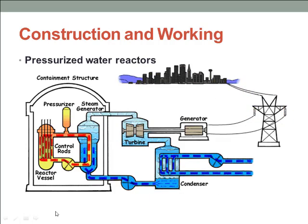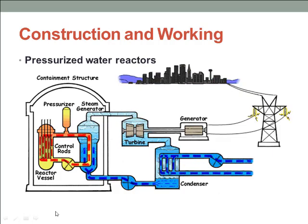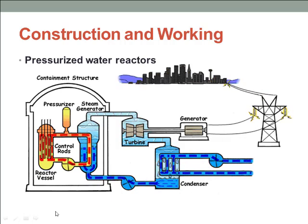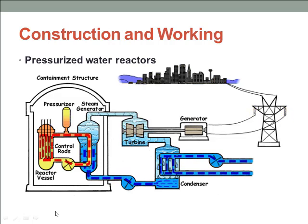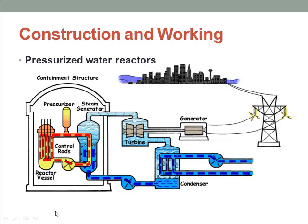Water in the reactor core reaches about 325 degrees Celsius, hence it must be kept under about 150 times atmospheric pressure to prevent it from boiling. Pressure is maintained by steam in a pressurizer in the primary cooling circuit. The water is also used as a moderator, but if any of the water turns into steam the fission reaction will be slowed down, so higher pressure must be maintained in the pressure chamber to keep the water in liquid form.